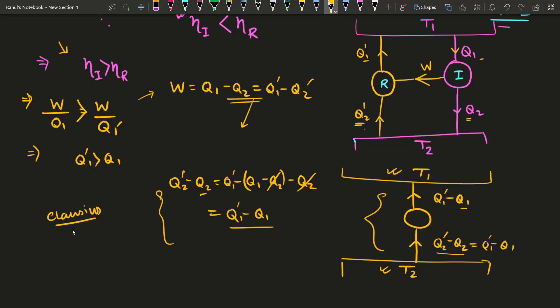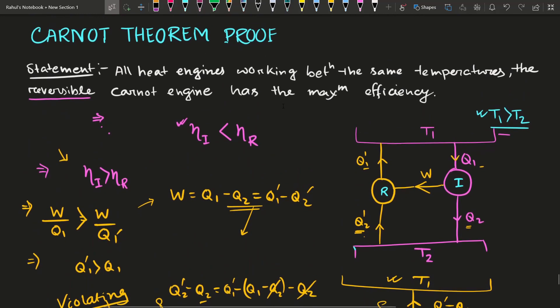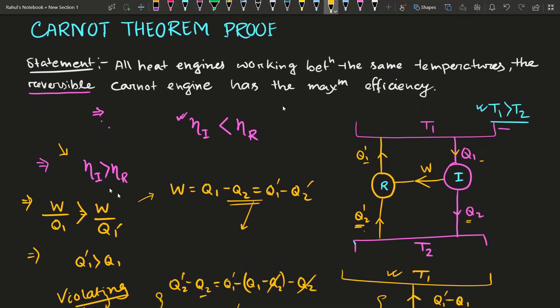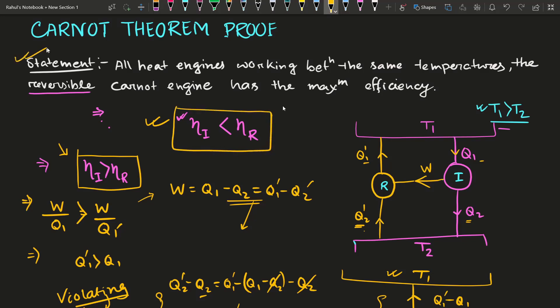If you don't know the Clausius statement, I have made a separate video discussing the equivalence of the Kelvin-Planck and Clausius statements of the second law of thermodynamics — the link will be in the description. This composite system completely violates that fundamental statement. Since the second law of thermodynamics cannot be false, our assumption that eta_i is greater than eta_R is wrong.